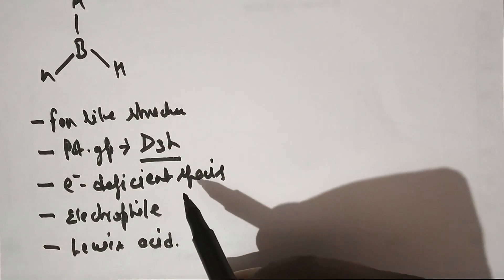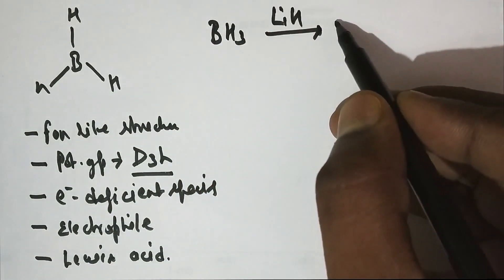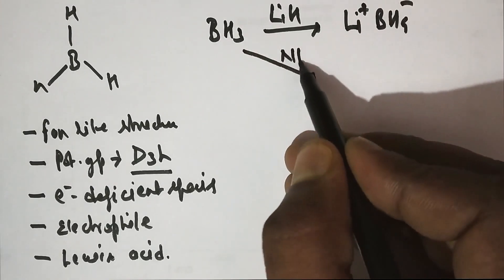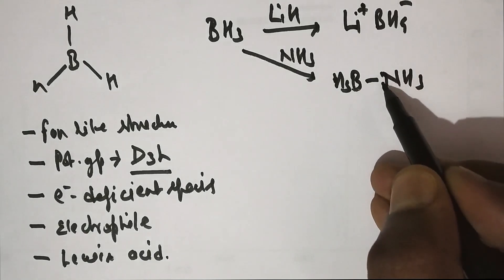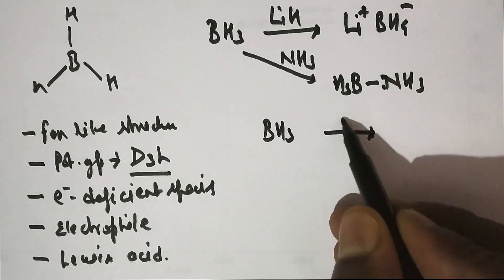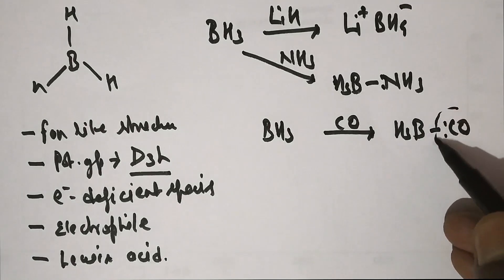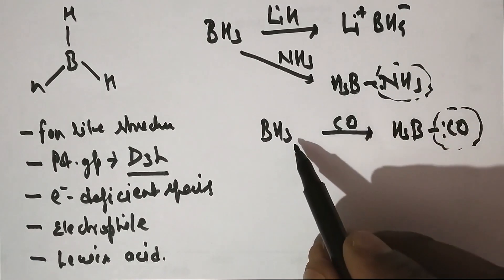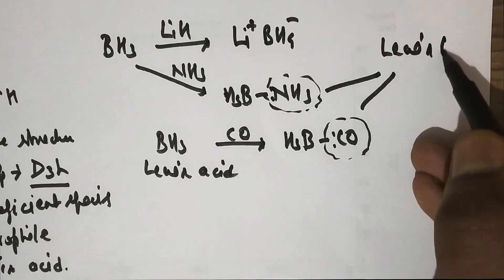Since BH3 is a Lewis acid, if it gets an electron-rich molecule — for example, if it reacts with lithium hydride — it will give a lithium salt of borohydride. Or if it reacts with NH3, a very well-known reaction, it will form an adduct BH3·NH3, where the lone pair of electrons from NH3 is shifted to the BH3 molecule. Similarly, if BH3 reacts with a carbonyl molecule, a borohydride carbonyl complex will form.